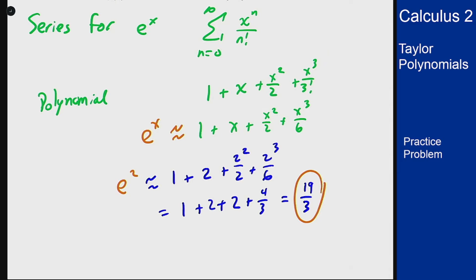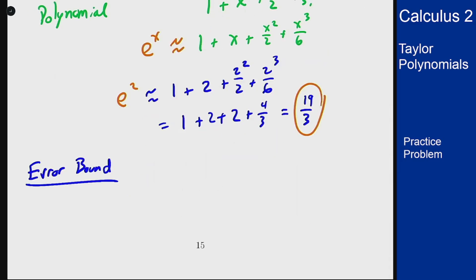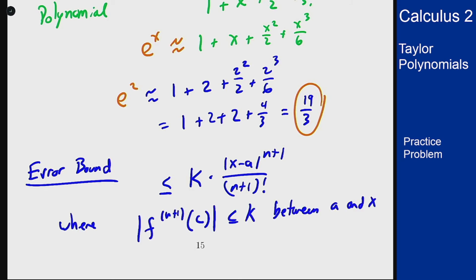Now for the error bound, Taylor's theorem tells us that the error bound between our approximate value and the actual value of e squared must be less than k times (x - a)^(n+1) over (n+1) factorial, where k is an upper bound for the (n+1)st derivative of f on this interval. And the interval here goes from a, the center point, to x, the point we're actually plugging in.